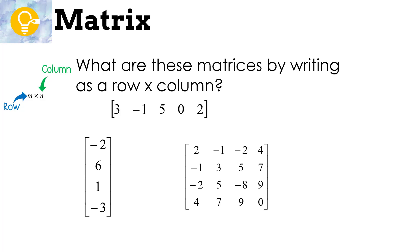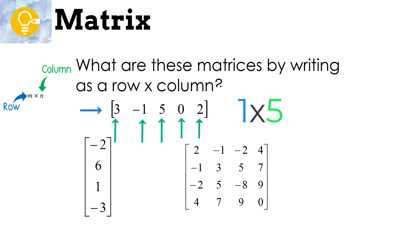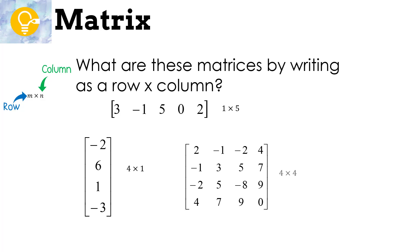I want you to pause the video and tell me: what are these matrices, written as row by column — just like the last one was a 3 by 3? The first one is actually a 1 by 5, because there's one row and 5 columns. The next one is a 4 by 1, because there are 4 rows and 1 column. The last one is a 4 by 4, because there are 4 rows and 4 columns.